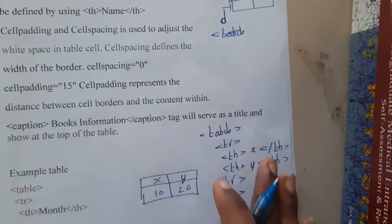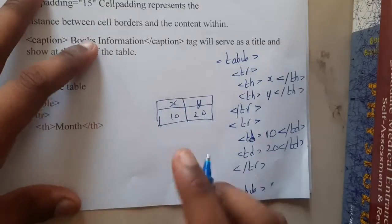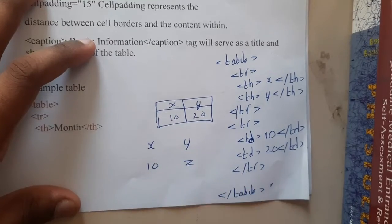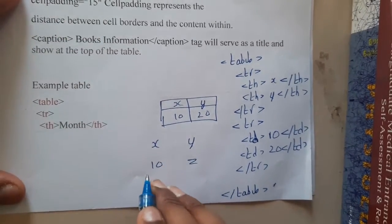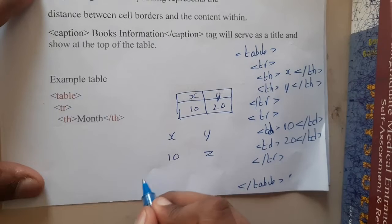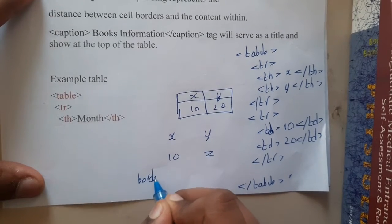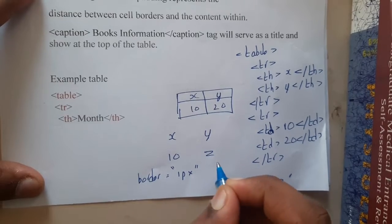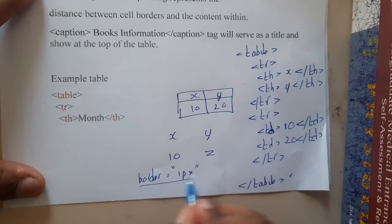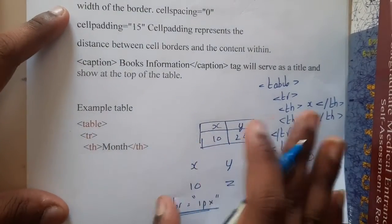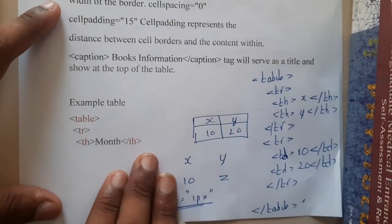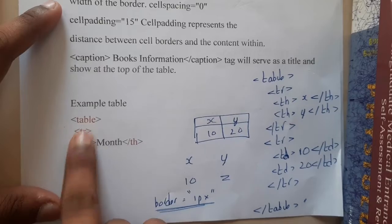Remember one more thing: when you code a table, you will not get the border by default. To get the border you need to add border="1" inside the table tag, which gives you a one-pixel thick border. You will only get a border automatically if you are using some other framework along with HTML.